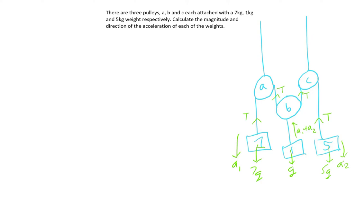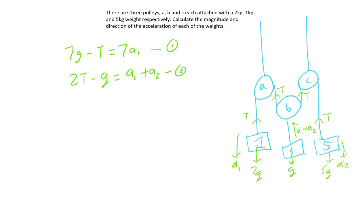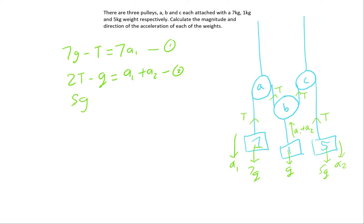We will write three equations. Since the acceleration is going downwards for the 7kg pulley, the net force would be weight minus tension: 7g minus T equals 7a1. This is our first equation. For the 1kg mass, since it is going upwards, the tension is more than the weight, so the net force is 2T minus g equals A1 plus A2. This is our second equation. For the third pulley, with acceleration assumed downwards: 5g minus T equals 5a2. We have three unknowns — T, A1, and A2.